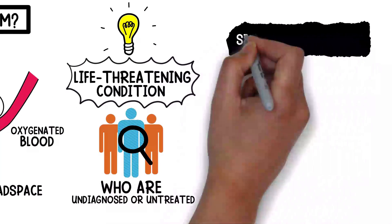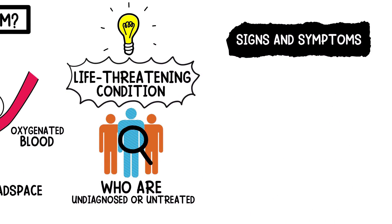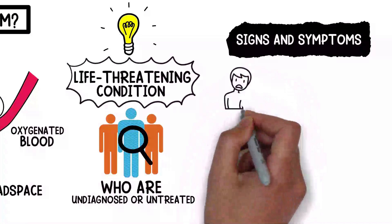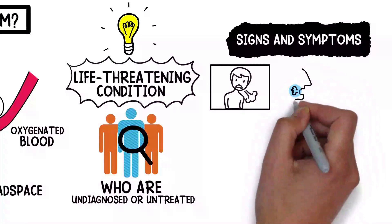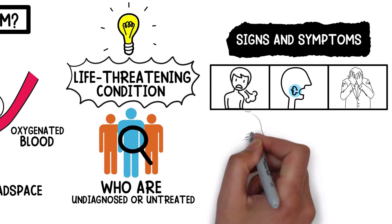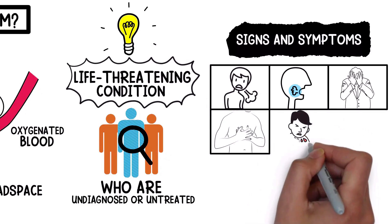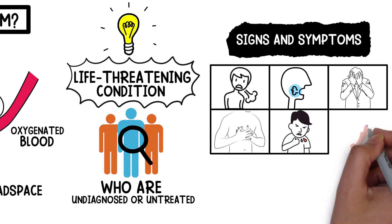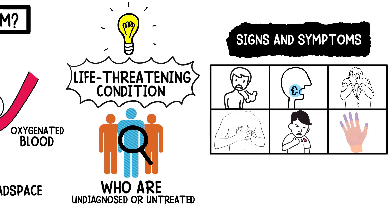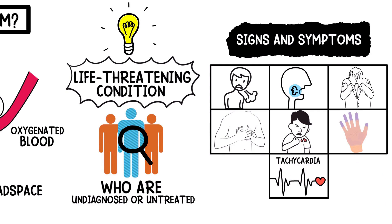Some of the signs and symptoms of a pulmonary embolism include dyspnea, tachypnea, anxiety, chest pain, hemoptysis, cyanosis, and tachycardia.